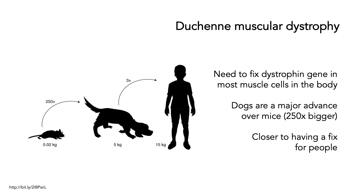The problem is that you need to fix the dystrophin gene in most muscle cells in the body. Doing this in mice is a very good start, but mice are much smaller than humans. This is why the ability to fix this particular gene in dogs was such a major advance, because dogs are over 250 times bigger than mice, and we are only about three times bigger than dogs. So the technology used to fix this disorder in dogs has the potential to fix the disorder in humans as well.